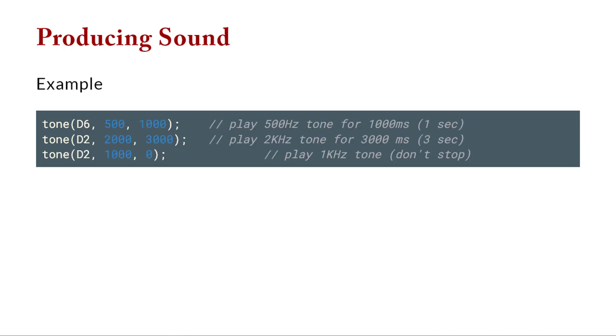And it looks like this as an example. So if I want to produce a sound on pin D6, that's where I have my buzzer connected. I want 500 Hertz and I want to play for one second. That's going to produce a low 500 Hertz sound for one second. You can see these other examples.